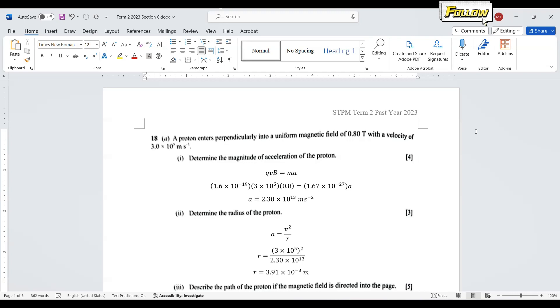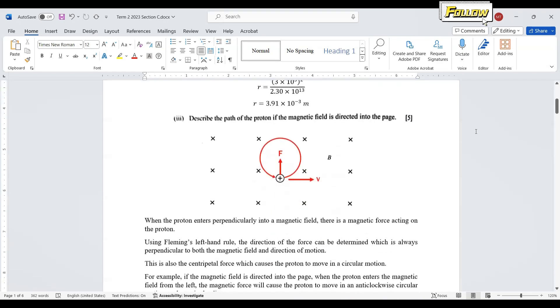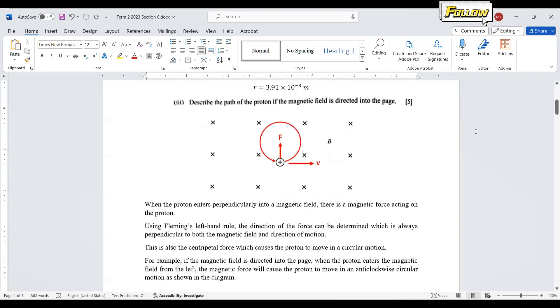For centripetal acceleration a = v²/r, we can get r = 3.91×10⁻³ meters. Moving on to the next question: sketch the path of the proton if the magnetic field is directed into the page.